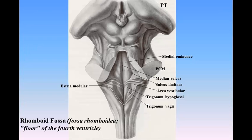Rhomboid fossa (fossa rhomboidea), floor of the fourth ventricle: The anterior part of the fourth ventricle is named, from its shape, the rhomboid fossa, and its anterior wall, formed by the back of the pons and medulla oblongata, constitutes the floor of the fourth ventricle. It is covered by a thin layer of gray substance, continuous with that of the medulla spinalis. Superficial to this is a thin lamina of neuroglia which constitutes the ependyma of the ventricle and supports a layer of ciliated epithelium.